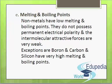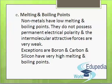Coming to the next property — melting and boiling points. Non-metals have low melting and boiling points. This is because they do not possess permanent electrical polarity and the intermolecular attractive forces are also very weak, so it is easy to pull the molecules apart by heating. There are few exceptions: boron, carbon, and silicon have very high melting and boiling points. They form giant molecules having a non-ending network structure, and the rupture of this structure requires a large amount of heat energy.